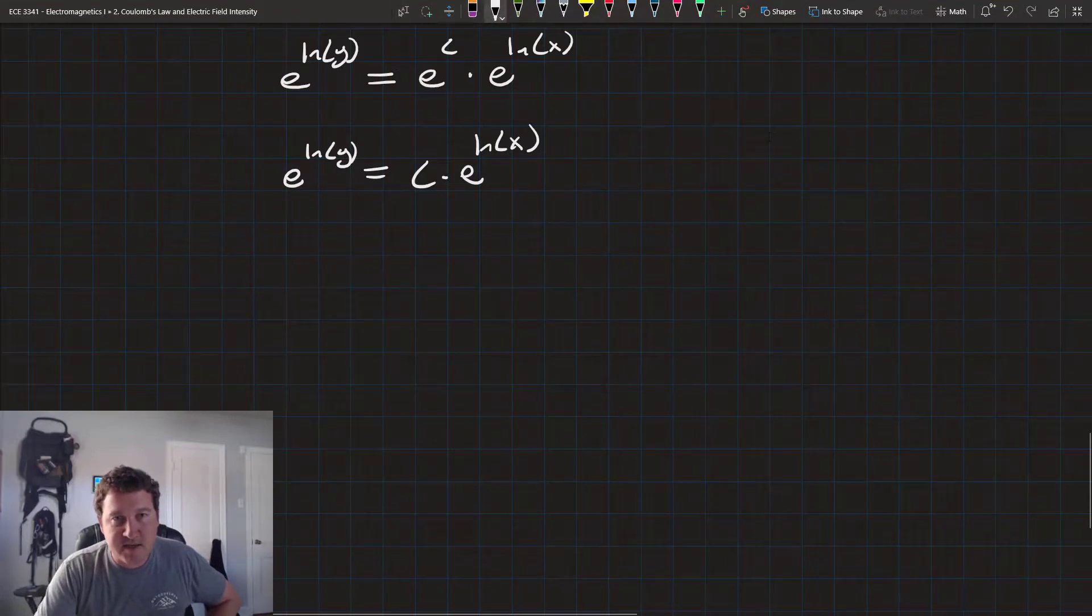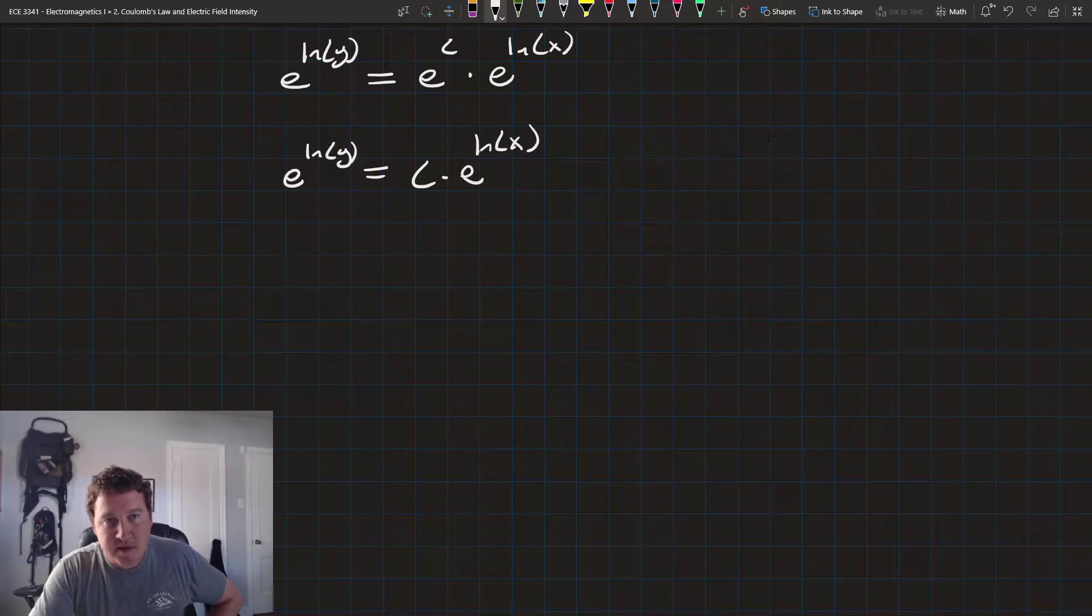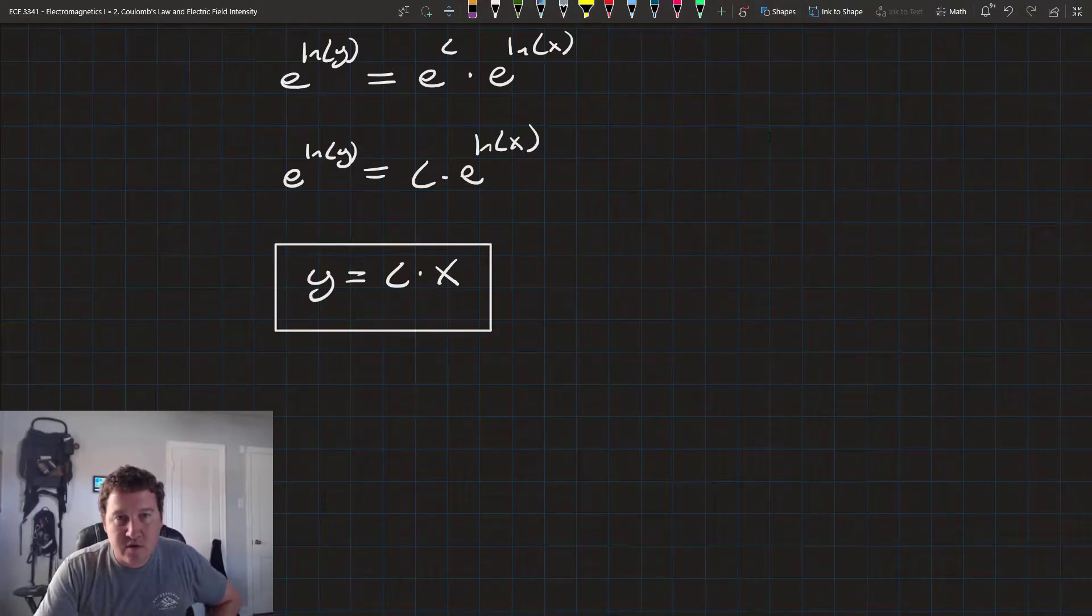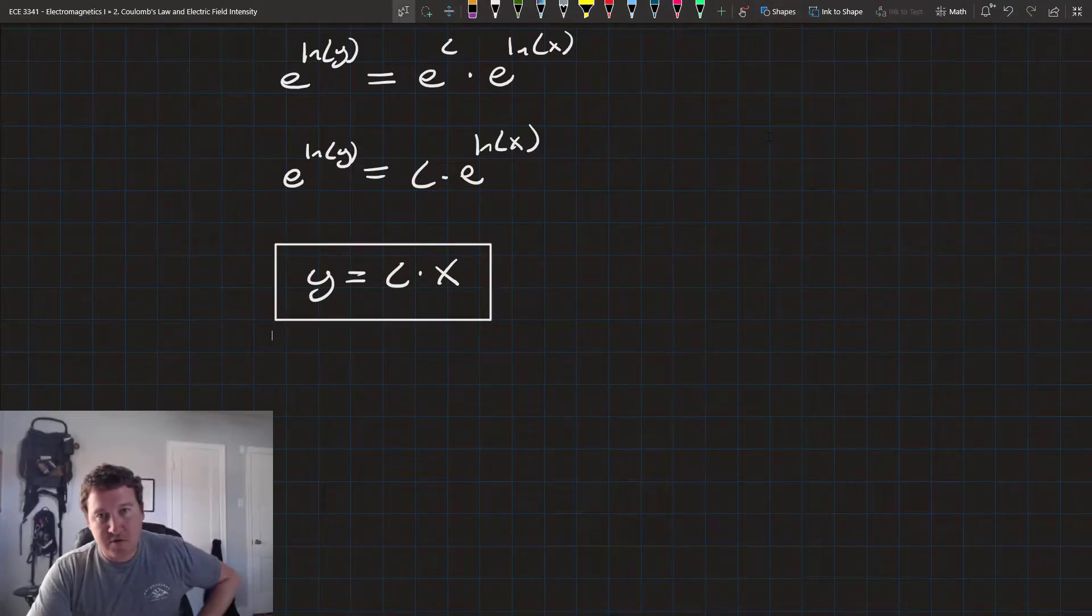It's okay to play it fast and loose with the constants. And finally, e raised to the natural log of something is equal to that something. And so, we get y equals c times x. And this is our general solution.